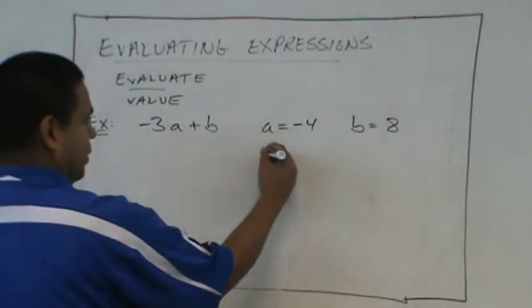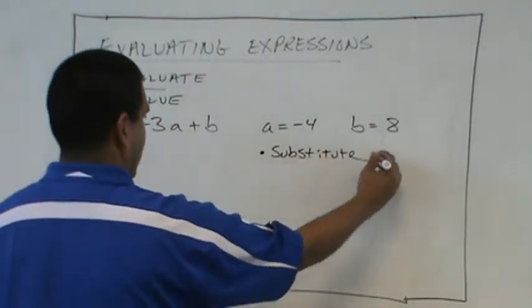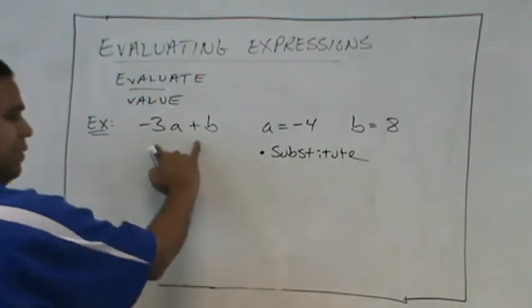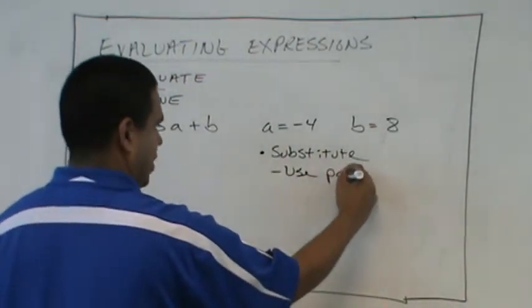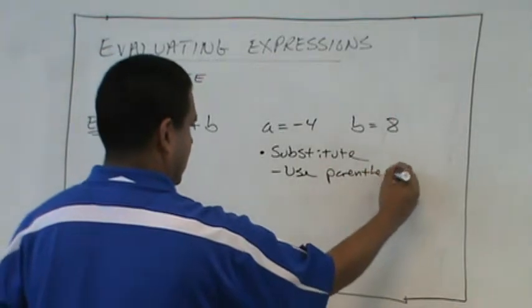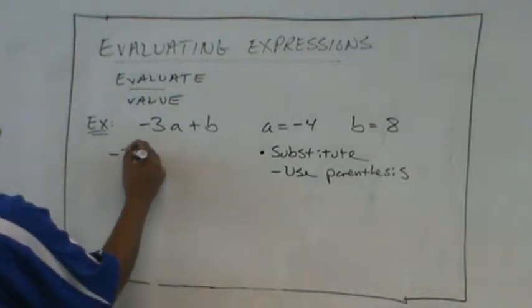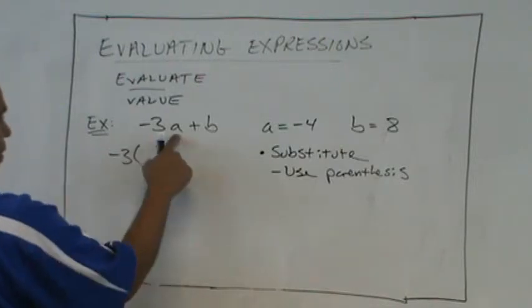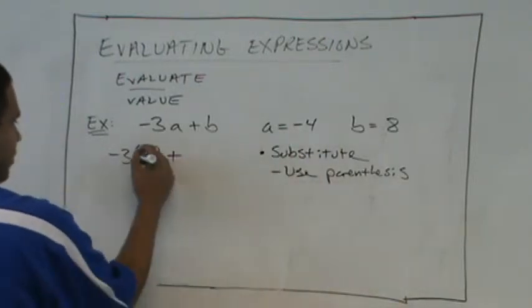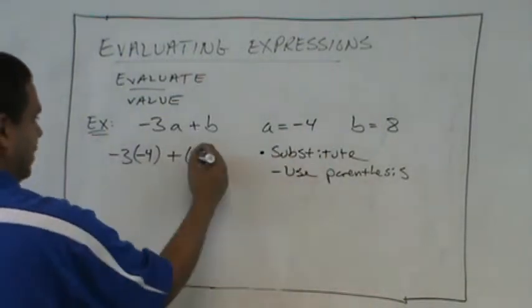The first thing we're going to do, we're going to substitute those values into that expression. And you are to use parentheses. Okay. So when we substitute, use parentheses. So we have negative 3, parentheses. And what was the value of A? Negative 4. So we'll plug in negative 4. And what's the value of B? Eight. Eight.